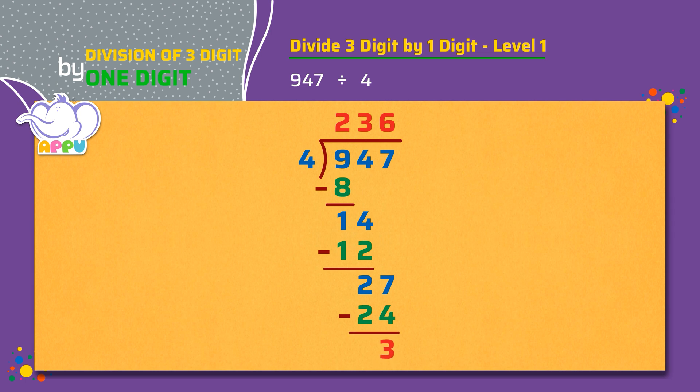We stop division because 3 is less than 4. So the quotient is 236 and the remainder is 3. Excellent.